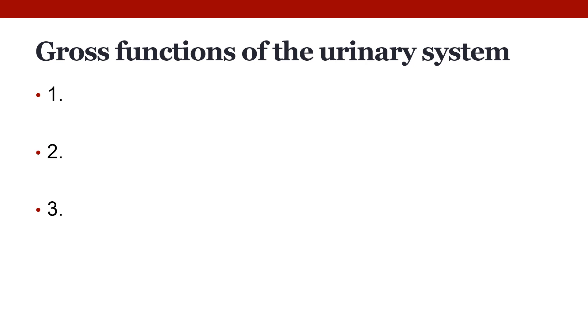The urinary tract is the body's drainage system for the eventual removal of urine. The main purpose of the urinary system is to filter or remove waste from the body. Our cells are constantly working, which means they're metabolizing substances and this creates waste products. Those waste products need to be removed before they become toxic. We can also create waste that needs to be removed from metabolizing drugs or other toxins that make their way into our body.